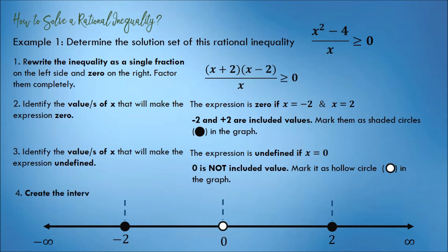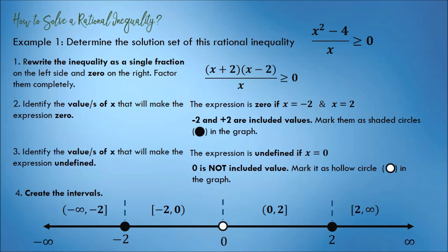Step number 4. Create the intervals. The first interval is (negative infinity, negative 2]. The second interval is [negative 2, 0). The third interval is (0, 2]. And the fourth interval is [2, positive infinity).